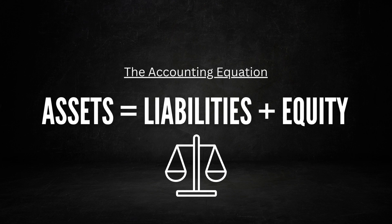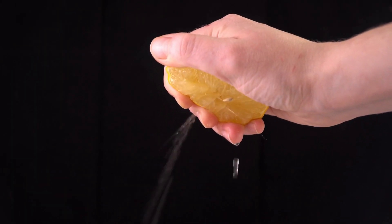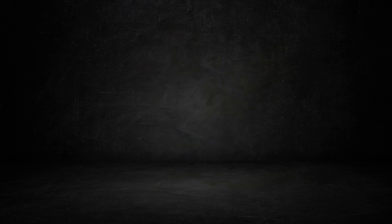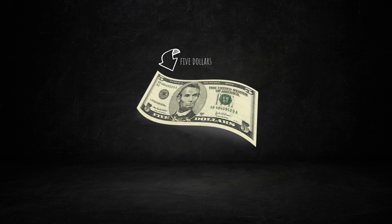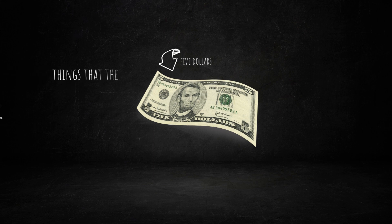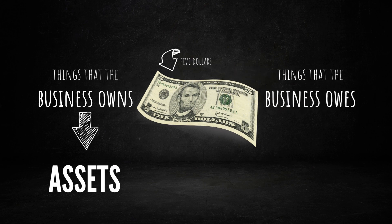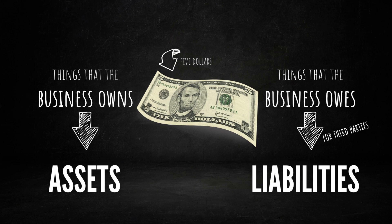To help illustrate this concept, let's embark on a hypothetical journey into the world of lemon entrepreneurship. Imagine I have a brilliant idea for a lemonade business. I start with $5 in my pocket, which I decide to lend to my business. In accounting terms, the things that the business owns are known as assets, while the things the business owes depend on who the lender is. If the business owes money to third parties, we refer to it as liabilities. However, if the business owes money to the owner — which in this case is me — it's called equity.